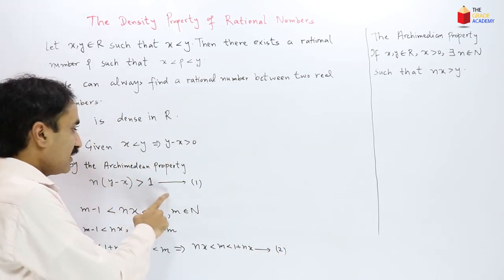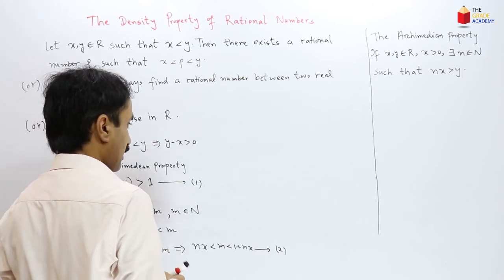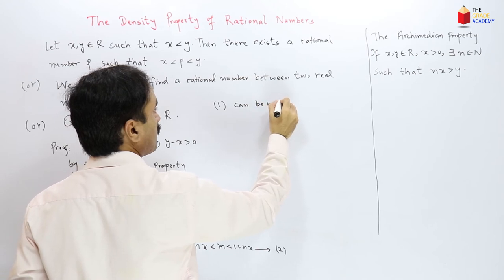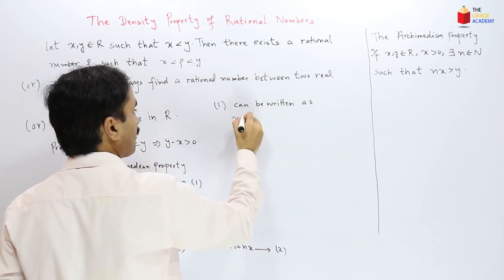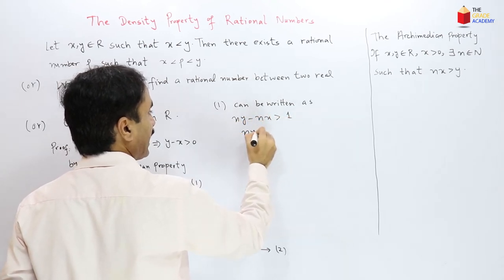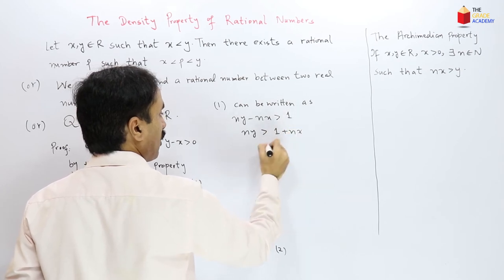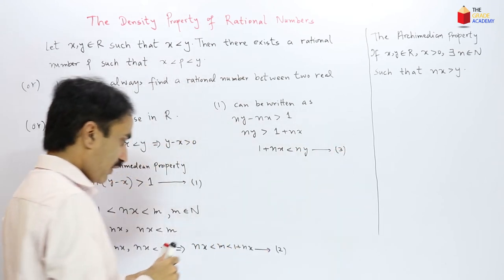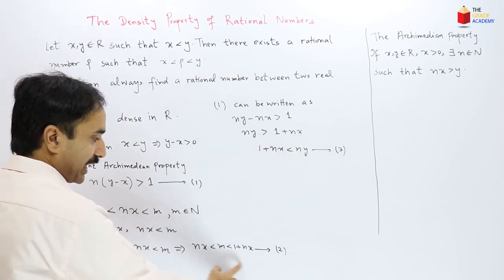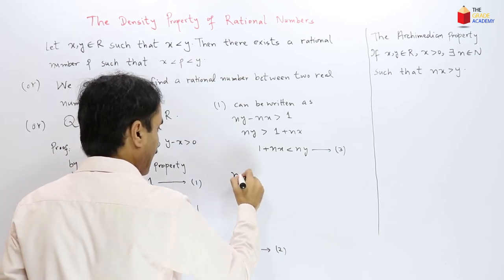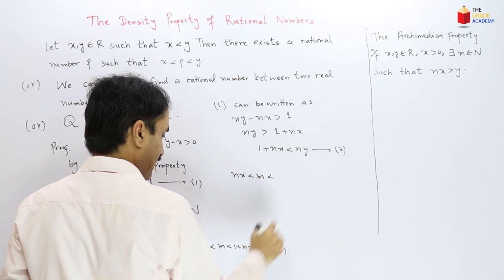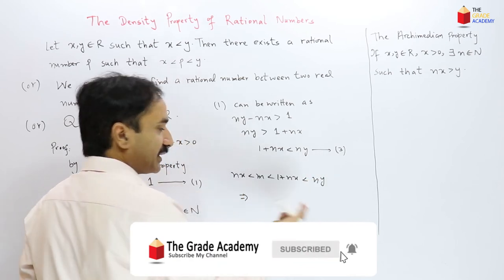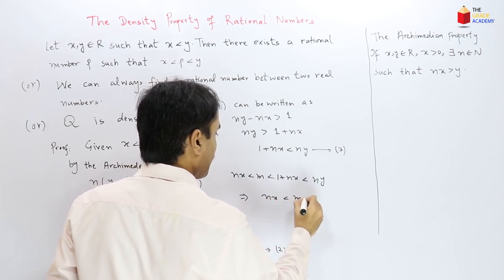Expanding inequality 1, we get n times y minus n times x is greater than 1, so ny is greater than 1 plus nx, i.e., 1 plus nx is less than ny. Call this inequality 3. Combining inequalities 2 and 3, we get nx is less than m, which is less than 1 plus nx, which is less than ny. By transitivity, nx is less than m is less than ny.